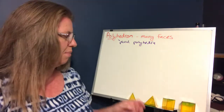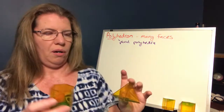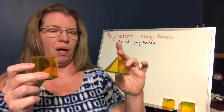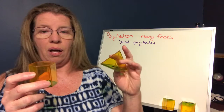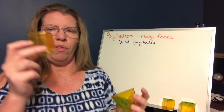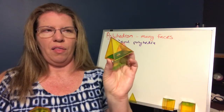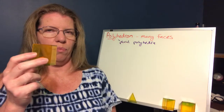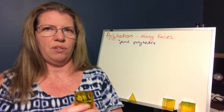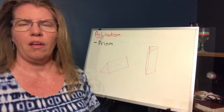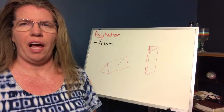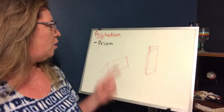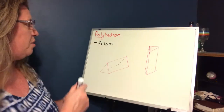There are two types of polyhedra: the prism and the pyramid. Let's take a look at the prism first. Let's look at our first type of polyhedron called the prism.